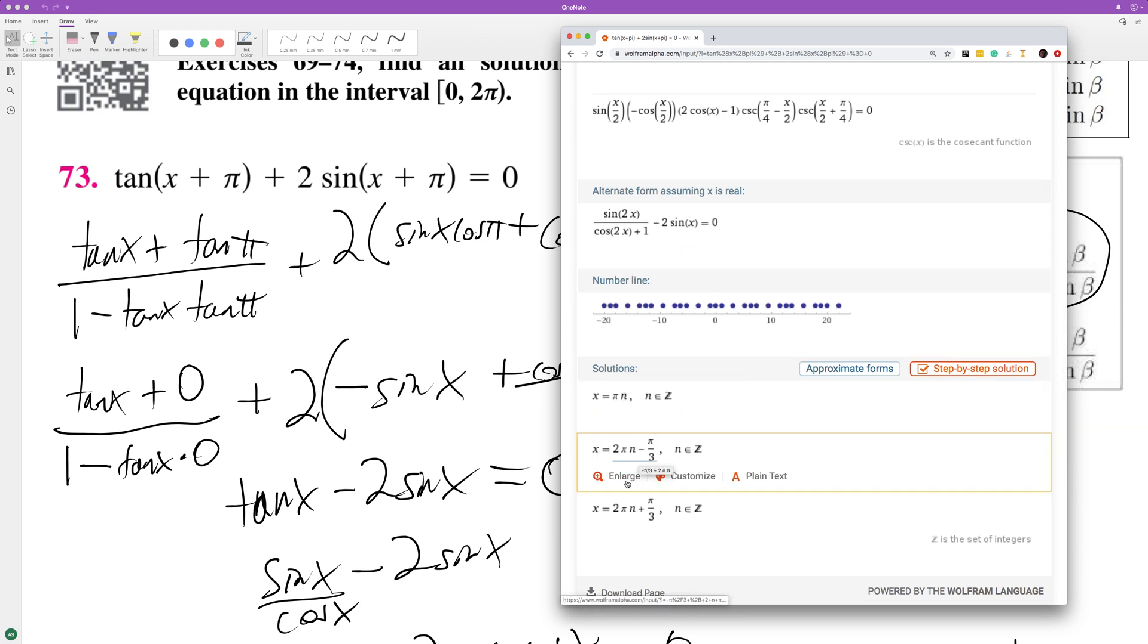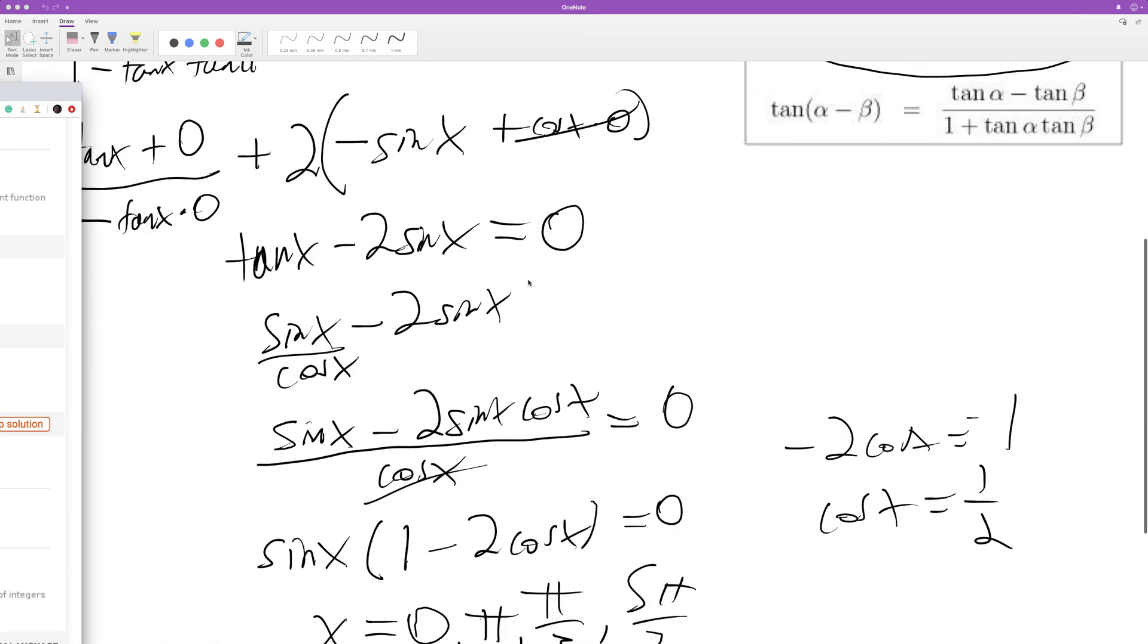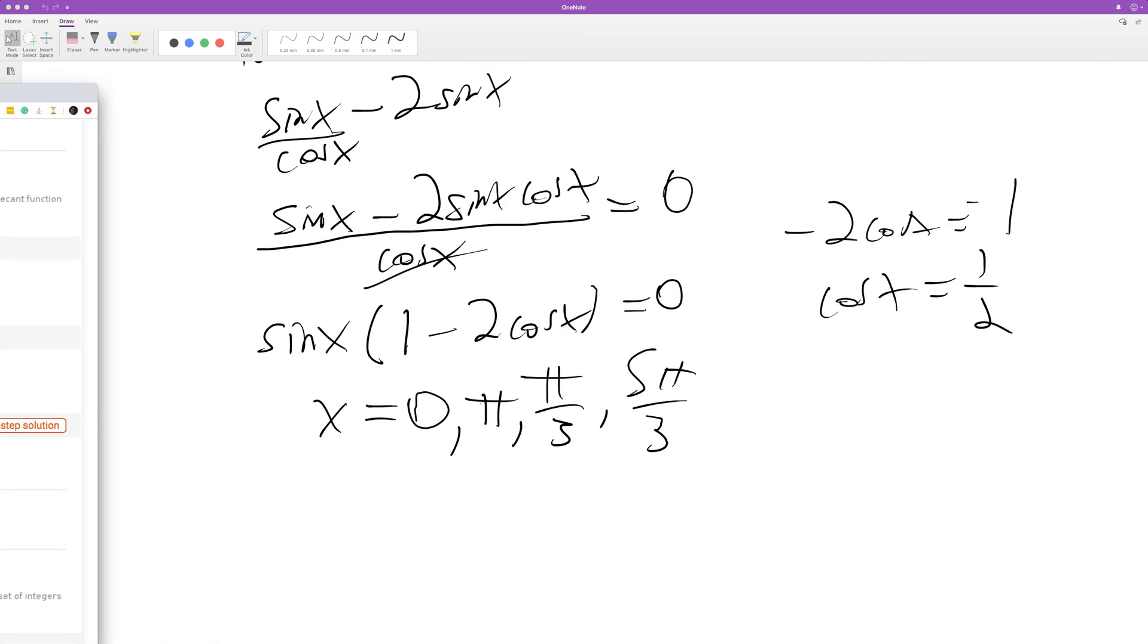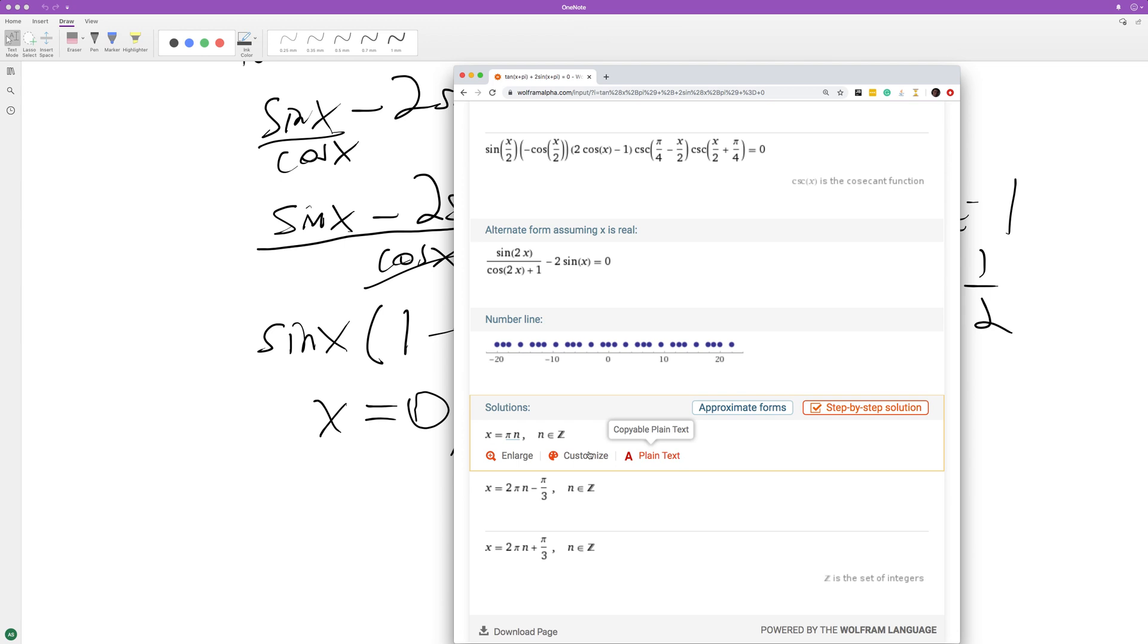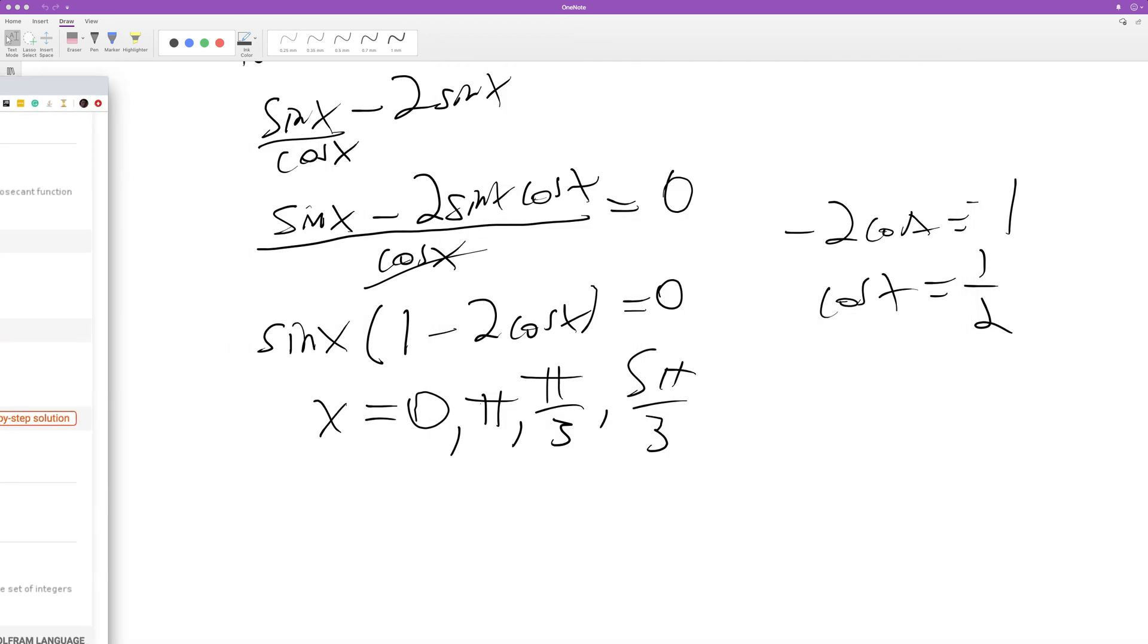Yep, so 5π over 3, 0 and π, which I have down there. So 0 and π, so that matches up with the criteria. We're only going from 0 to 2π. So 5π over 3, and then that looks like π over 3. Yep, so that works out correctly.